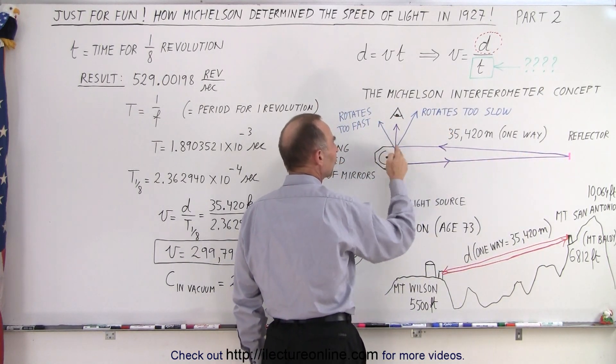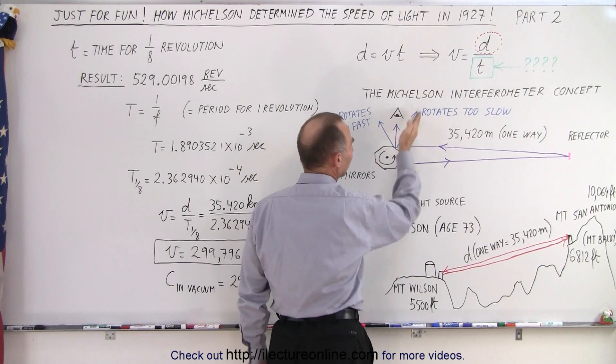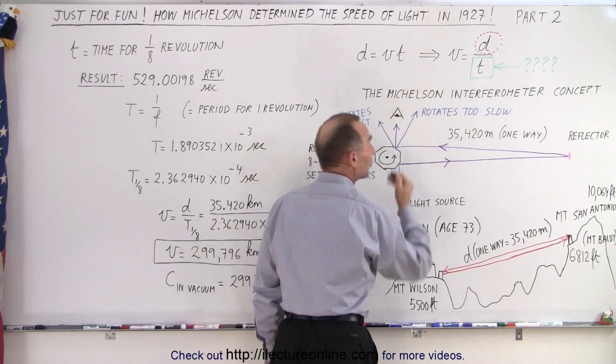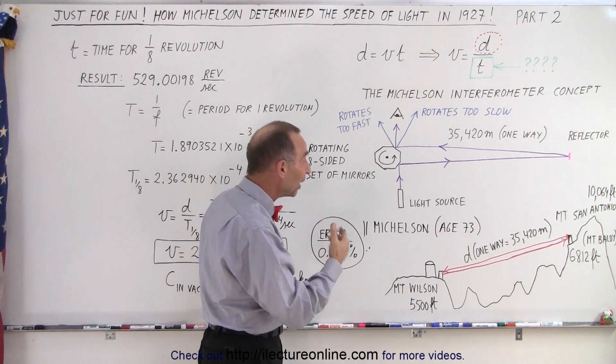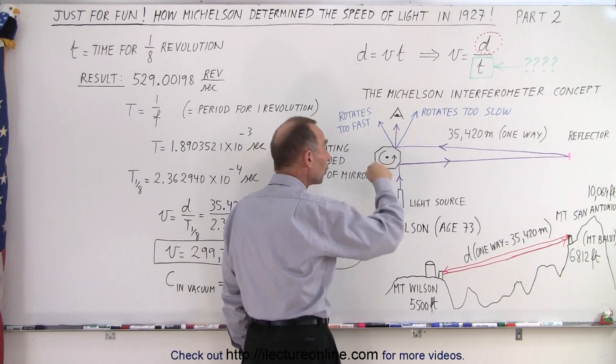The light would bounce off this mirror and it would hit the reflector, then come back and hit off this mirror. If the rotation wasn't fast enough, the reflection would be at an angle like this, and the observer could not see any light.